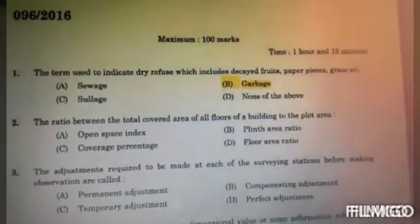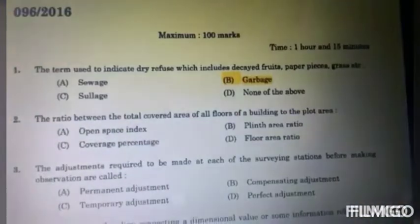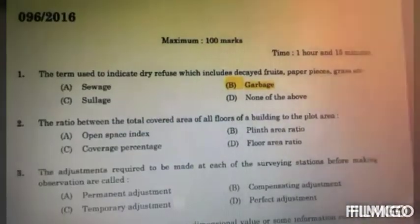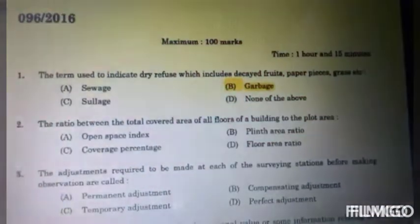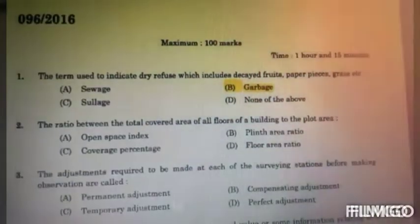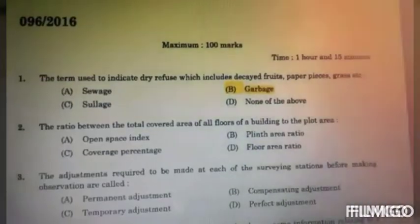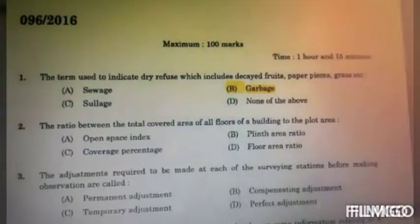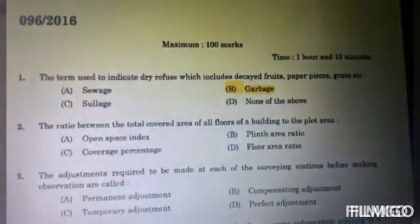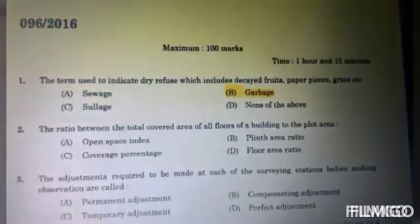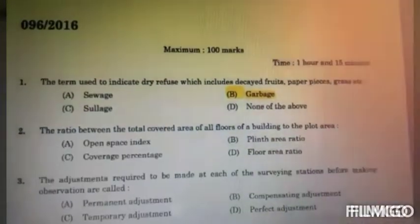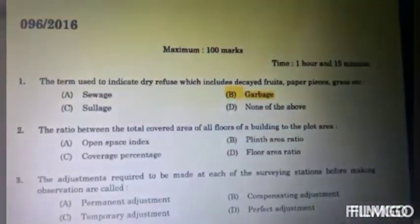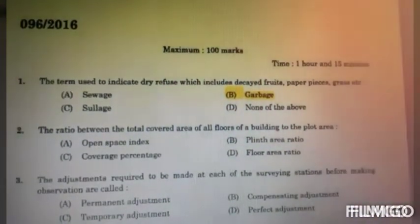The second question: the ratio between the total covered area of all floors of a building to the plot area. The options are: A. Open Space Index, B. Blind Area Ratio, C. Coverage Percentage, D. Floor Area Ratio.